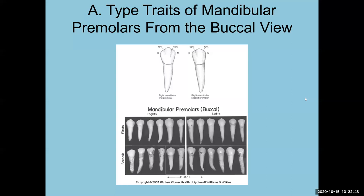Let's look at the mandibular premolars from the buccal view. On the right we have the first premolar and on the left the second premolar. The first premolar mimics the canine in both function and appearance. Moving more distally, the CEJ curves less the more posterior you go — so the second premolar has a slightly straighter CEJ than the first. Developmental grooves are on different spots for each. If a root is going to curve, it's going to curve towards the distal.